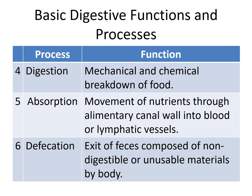Four is digestion — it's interesting that even though it's called the digestive system, digestion is only one component of its different functions. Digestion is the mechanical and chemical breakdown of food. This is required for the next step, which is absorption: the movement of nutrients through the alimentary canal wall into the blood or lymphatic vessels. While it's still in the alimentary canal, anything there is not really part of our body yet. Finally, not everything is digested and absorbed — we have defecation, which is the exit of feces composed of non-digestible or unusable materials.